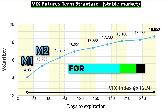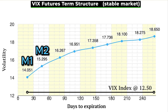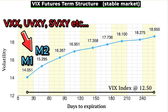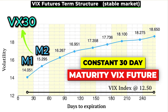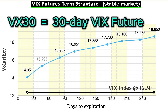From lesson three in this course, volatility ETPs like UVXY, VXX, and SVXY hold a combination of only the front two month VIX futures — M1 and M2. Their allocation between those creates a constant 30-day maturity VIX future, which I call VX30. So remember that VX30 is the combination of only the front two month VIX futures.